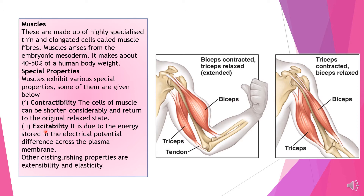Muscles show two special types of characteristics: contractibility and excitability. Contractibility means the cells of the muscles can be shortened considerably and return to the original relaxed state. You can see the biceps muscles getting shortened, due to which we are able to move the arm upwards. At the same time the triceps is getting relaxed, and when the arm comes down the biceps relax while the triceps contract.